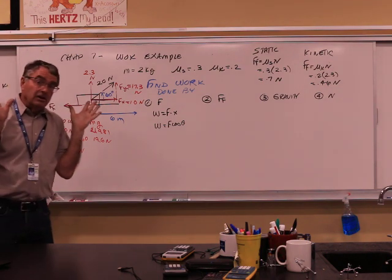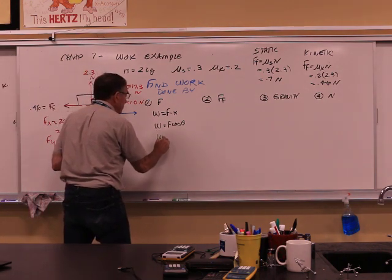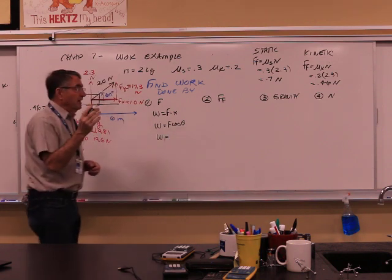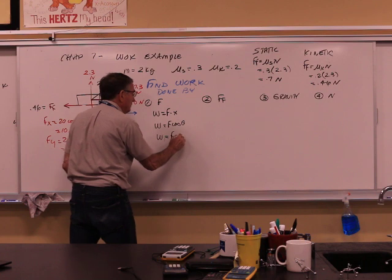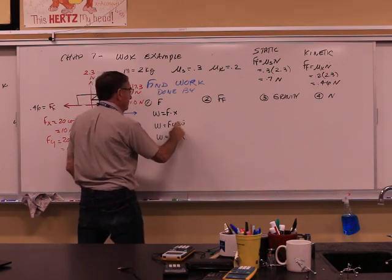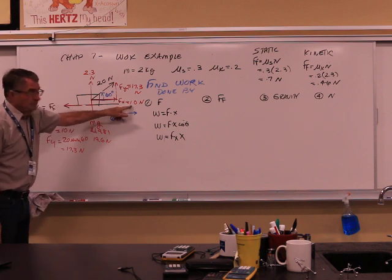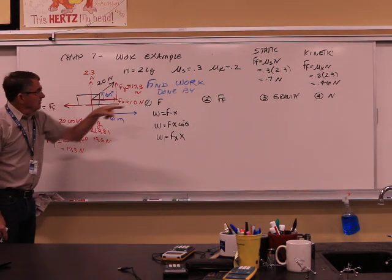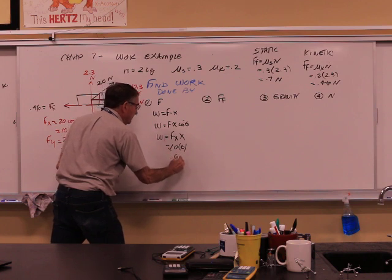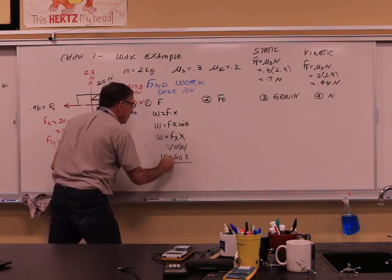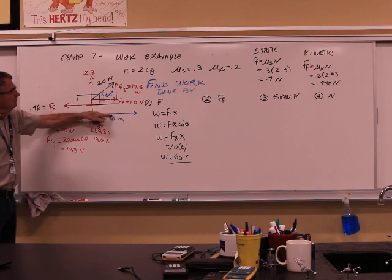Now we can go ahead and do all the work calculations. Work means how much force acts in the same direction as the displacement. Work equals force in the x direction times distance. That's F cosine theta times x. The x-component of force is 10 newtons, and the distance is 6 meters. So work done by F equals 10 times 6, which gives you 60 joules.